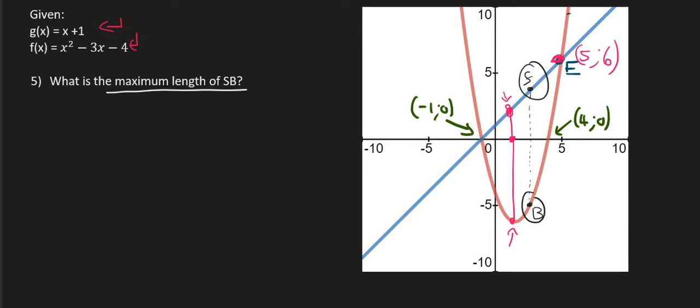We know that the length of that line is going to be the y value of the top point minus the y value of the bottom point. Pause the video if that part doesn't make sense and just think about that for a bit. We do know that the length will be the y value of the top graph minus the y value of the bottom. So the y value of S minus the y value of B. And that's going to give us the length.